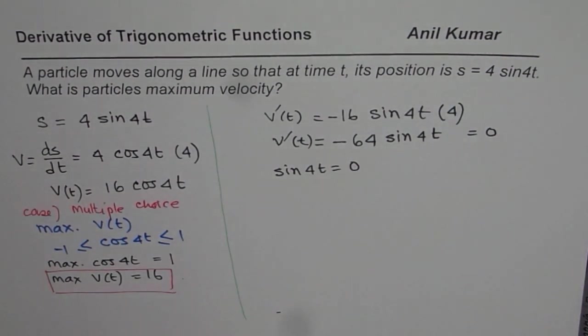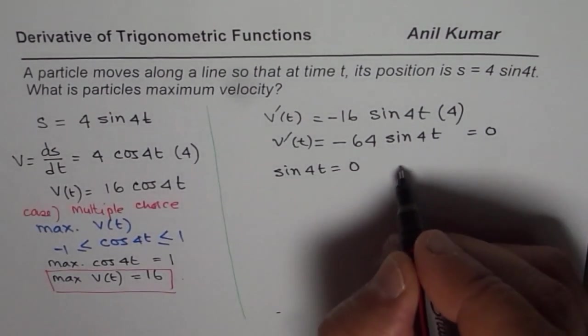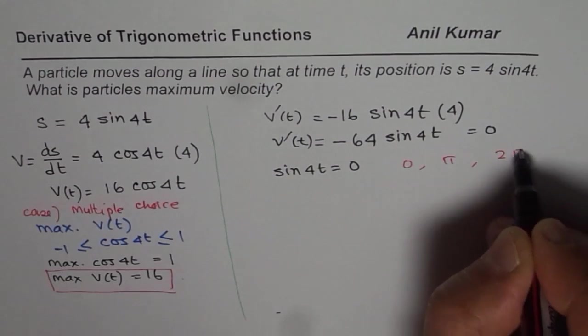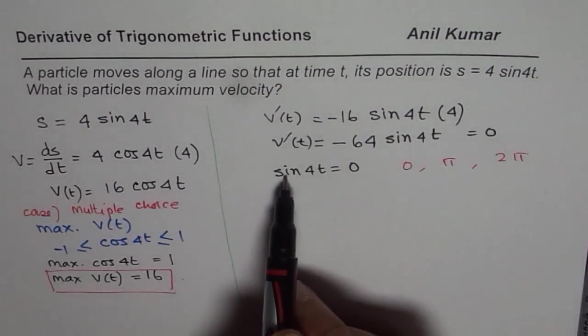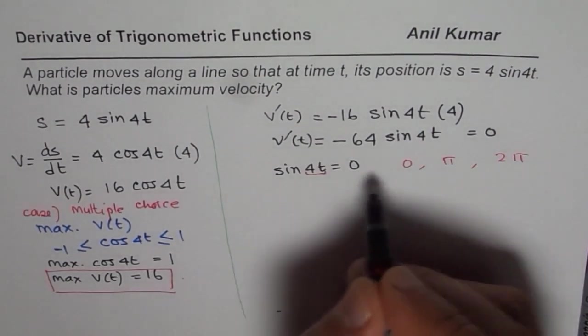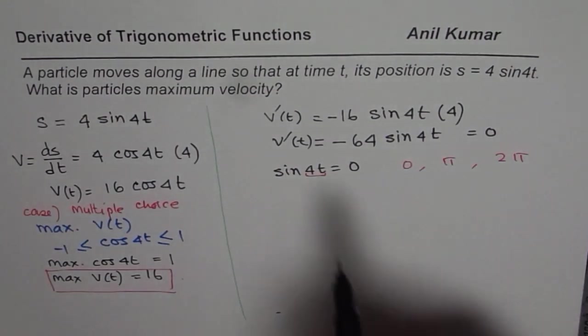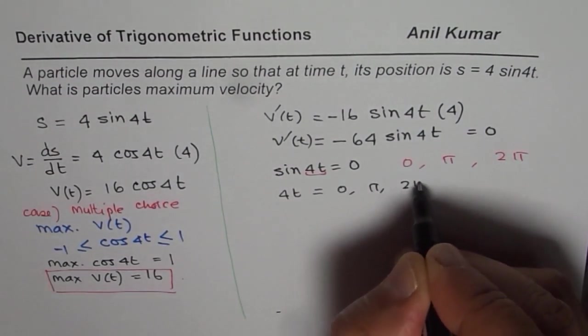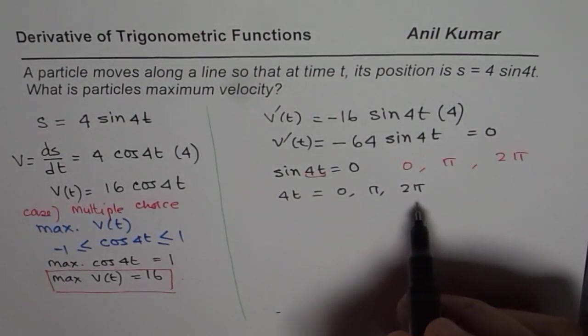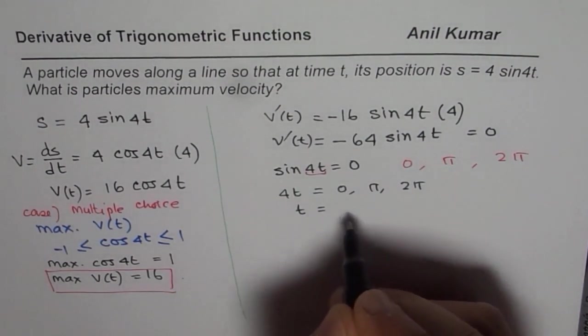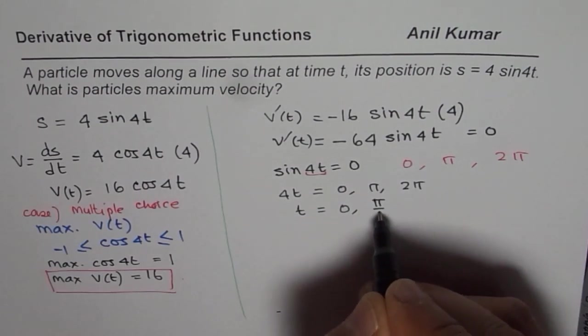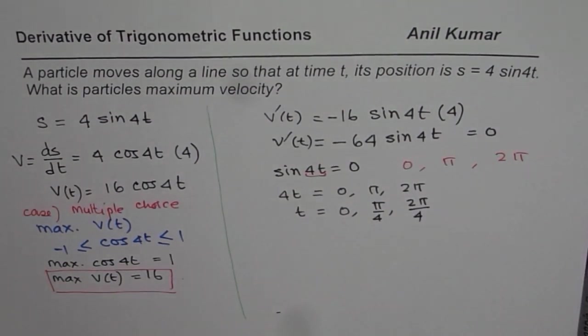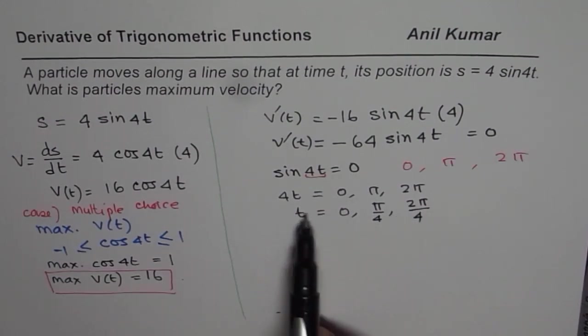Sine is 0 for which values? Well, sine is 0 for 0 or pi or 2 pi, for example. So these are the different values for which sine of any angle is 0. So we say 4t is equal to either 0 or pi or 2 pi if we are talking about limited interval. From here t will be equal to 0 or pi by 4 or 2 pi divided by 4 which is pi by 2. So these are the critical numbers.